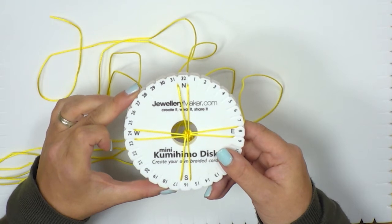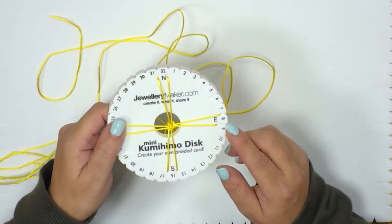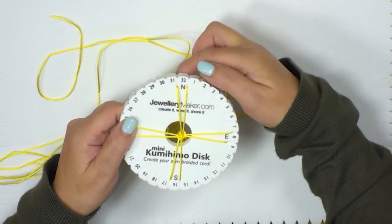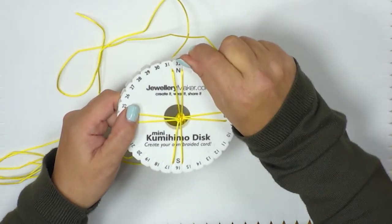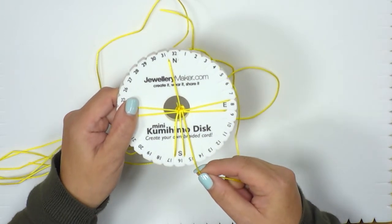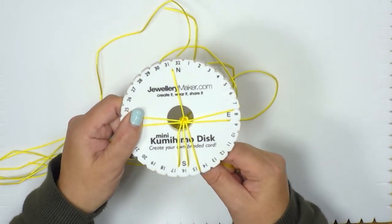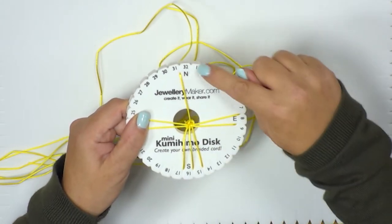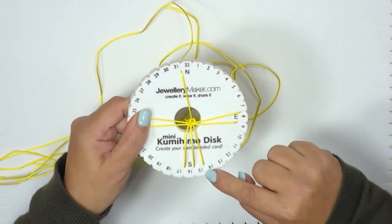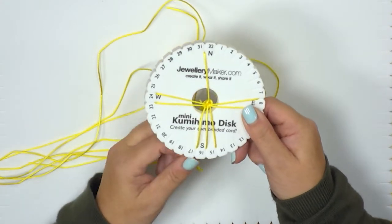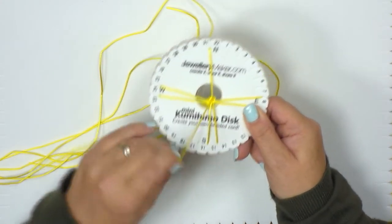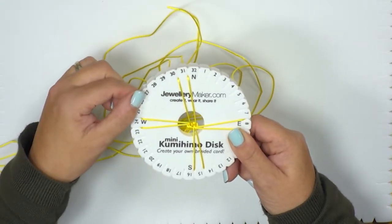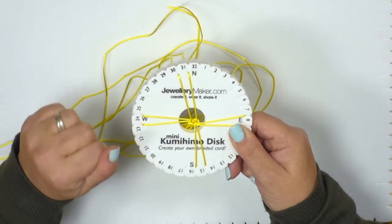Okay so this is our starting point. So it's quite a simple braid. So all we're going to do is we're going to look at this top right hand cord. We're going to take that one out of the slot by the north and we're going to bring it down and we're going to pop it into the slot next to the south. So we've gone from top right to bottom right. We're now going to go from bottom left to top left. So that's one completed stitch if you like or braid.